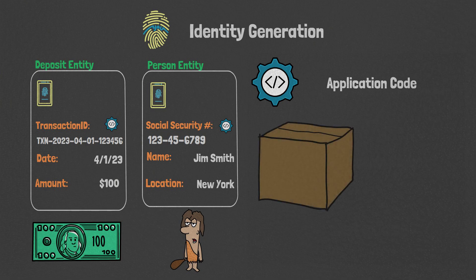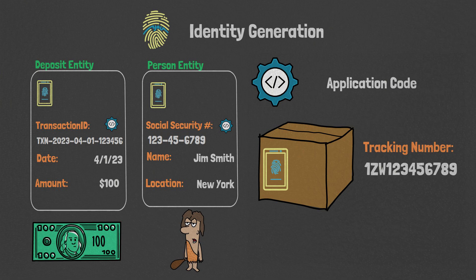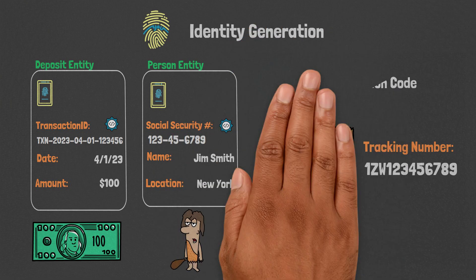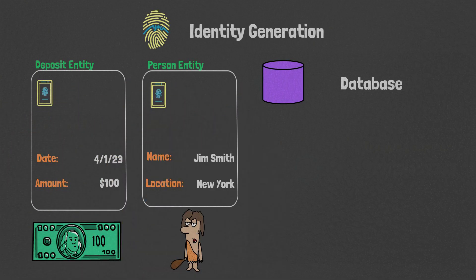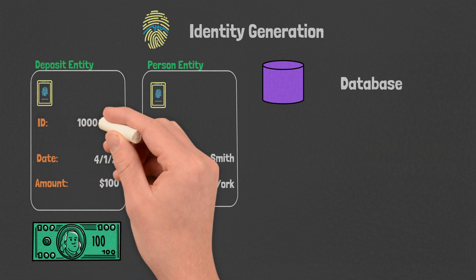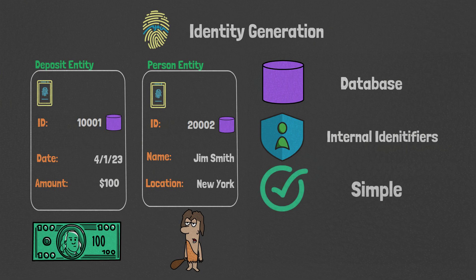A good example of this might be a tracking number for an order shipment, where the identity requirements are more complex and go beyond a simple int. In this case, it makes sense to have the application generate the identity. The second approach is to have a persistence layer such as a database handle the identity creation for you. A common implementation is to have the database generate an incremental integer to represent the identity of your entity. This is great if you need an identity that is internal to the system, and the benefit is its simplicity, as database performance favors integers for keys.